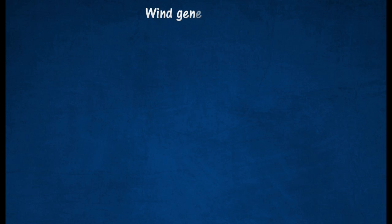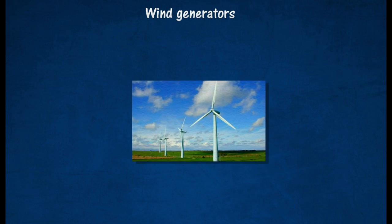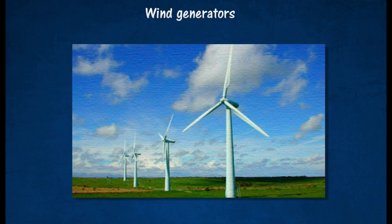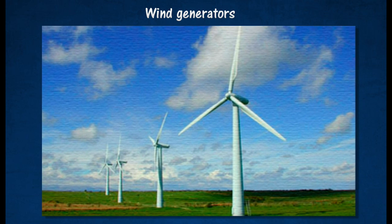High-speed wind can be used to turn the blades of large windmills, which will in turn drive generators to produce electricity. Wind-generated electricity does not cause air pollution, but it does cost more to produce compared to electricity generated from coal.